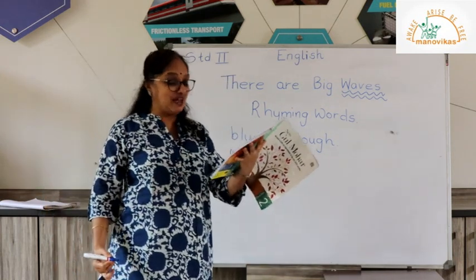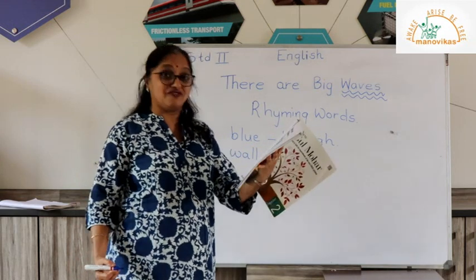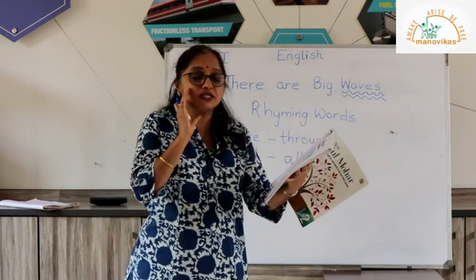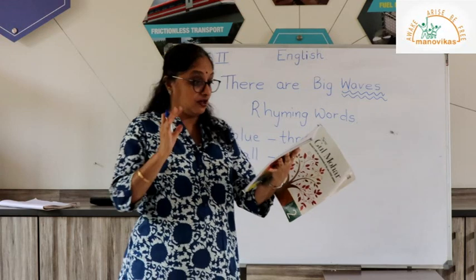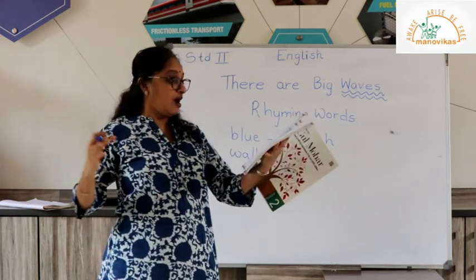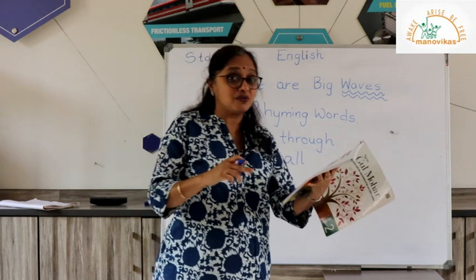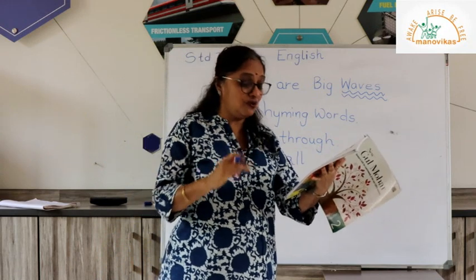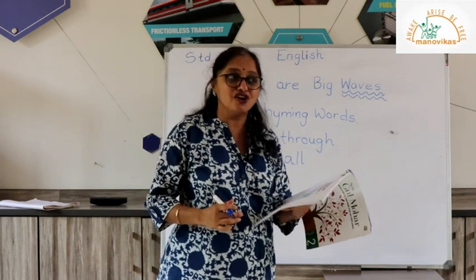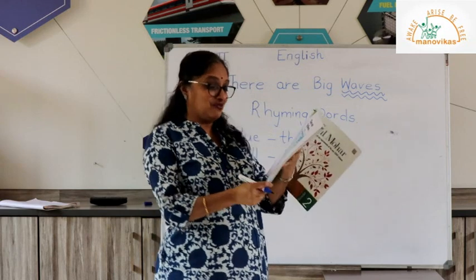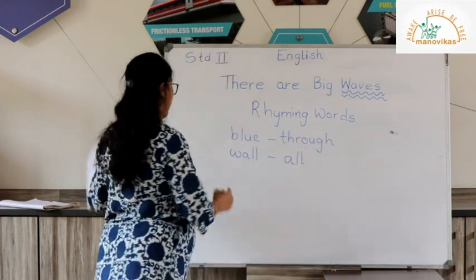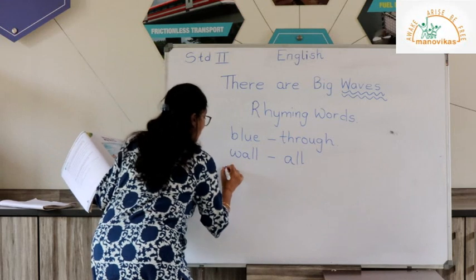So let's go to the last four lines of the poem. Waves that can whisper, waves that can roar, and tiny waves that run at you, running on the shore. So which are the rhyming words here? Yes - row and shore.